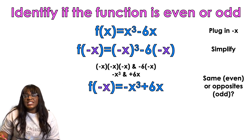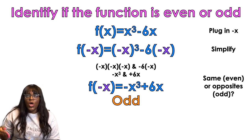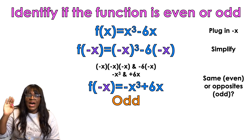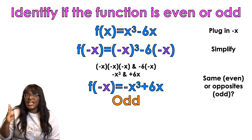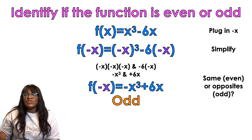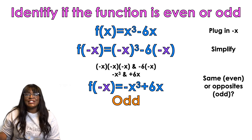That equals negative 1. So it's negative x cubed. And then I have negative 6 times negative x. And that's going to be positive 6x. So when that happens, I replace it. So my new function, when I plug in negative x, I'm going to get negative x cubed plus 6x. That is an odd function.